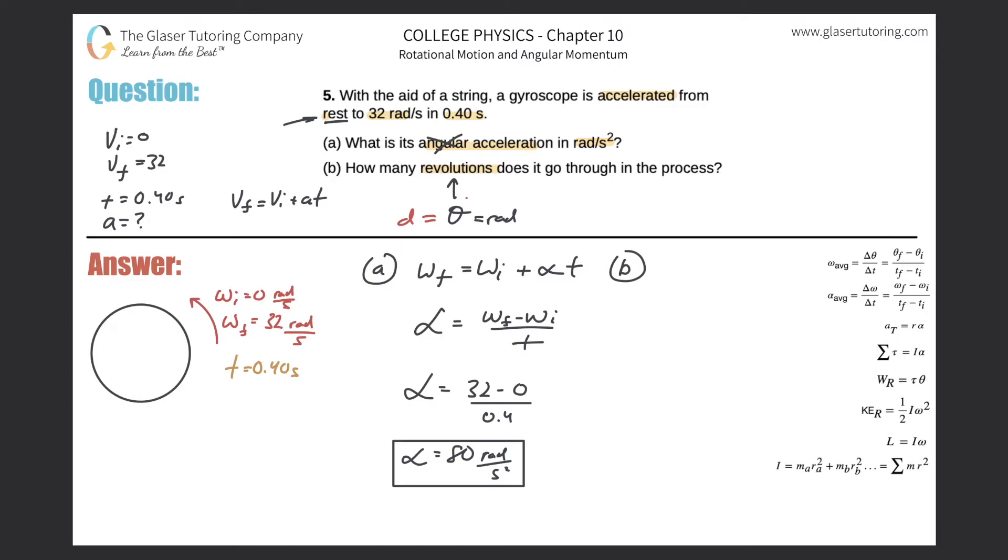We would have used this equation: v_f squared is equal to v_i squared plus 2ad, where x is really the d, the distance. All we now have to do is translate this into the analog in rotational kinematics.